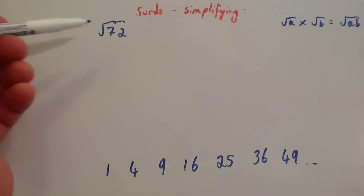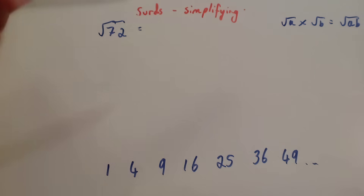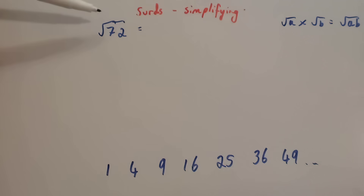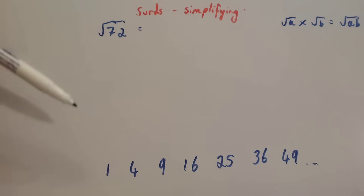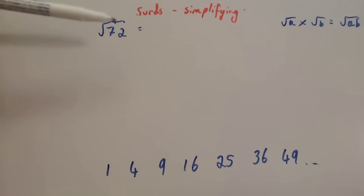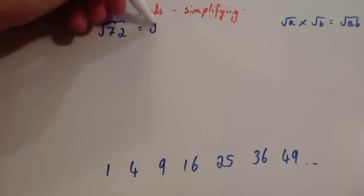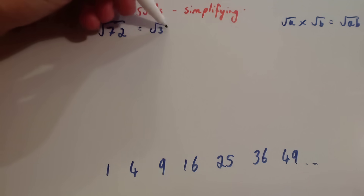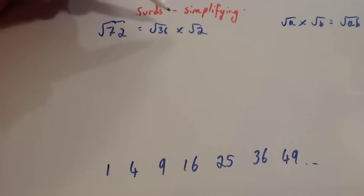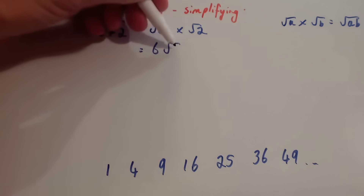Let's simplify the square root of 72. You want to split it into two factors — the largest square number that goes into 72 is 36. So that would be root 36 times root 2. The square root of 36 is 6, so that gives you 6 root 2.